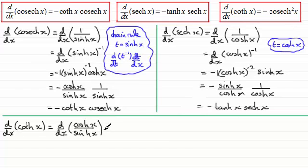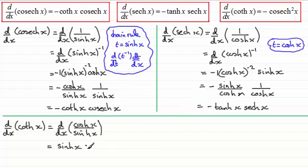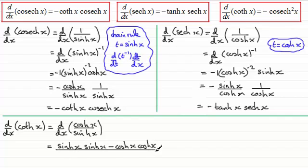You might want to pause the video at this stage and carry on with this one. Using the quotient rule, we're going to have the denominator sinh x multiplied by the differential of the numerator — differential of cosh x is sinh x. Then we'd have minus for the quotient rule: take the top part of the fraction, which is cosh x, multiplied by the differential of the denominator — differential of sinh x is cosh x. And this is all divided by the denominator squared, which is sinh squared x.